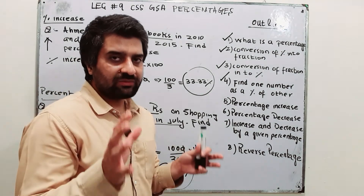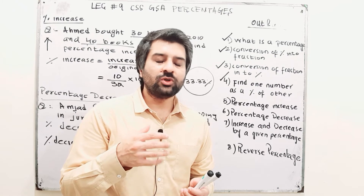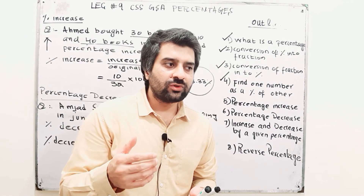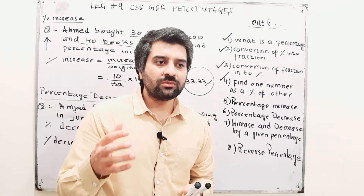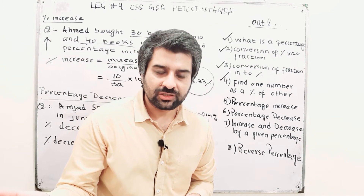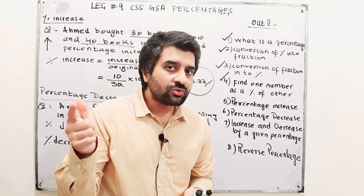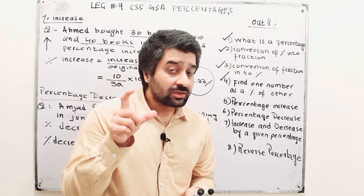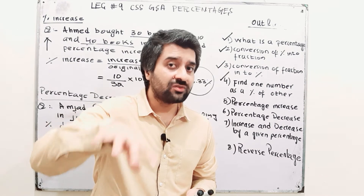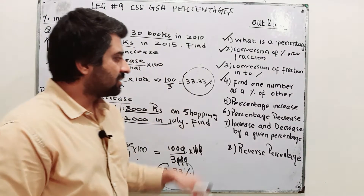So that is the concept of percentage increase and percentage decrease. You will be given two quantities — for example, the cost of a watch increased from $100 to $200. Find the percentage increase. The difference is $100, divided by the original $100, multiplied by 100, gives 100 percent increase.